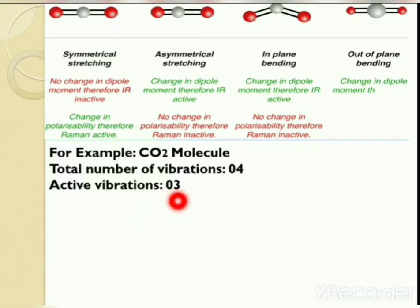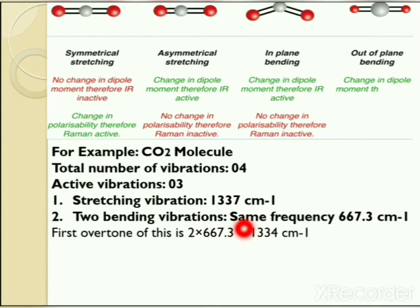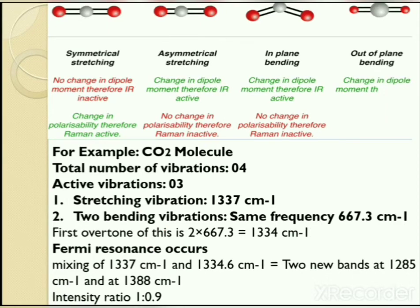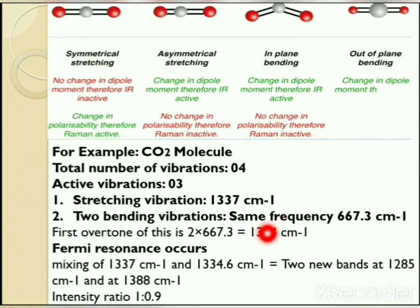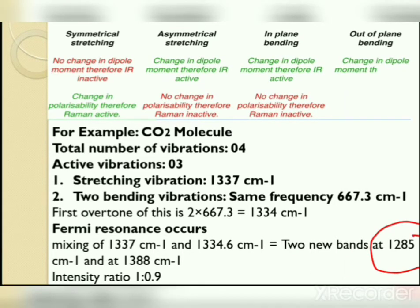The stretching vibration occurs at 1337 cm⁻¹, and two bending vibrations occur at the same frequency of 667.3 cm⁻¹. Because these two bending vibrations occur at the same frequency, their first overtone is 667.3 × 2 = 1334.6 cm⁻¹. Comparing this with the stretching vibration, these values are very close. Because of this, Fermi resonance occurs, and mixing of 1337 cm⁻¹ and 1334.6 cm⁻¹ gives two new bands at 1285 and 1388 cm⁻¹, showing frequency shifts — one towards lower and the other towards higher frequency.